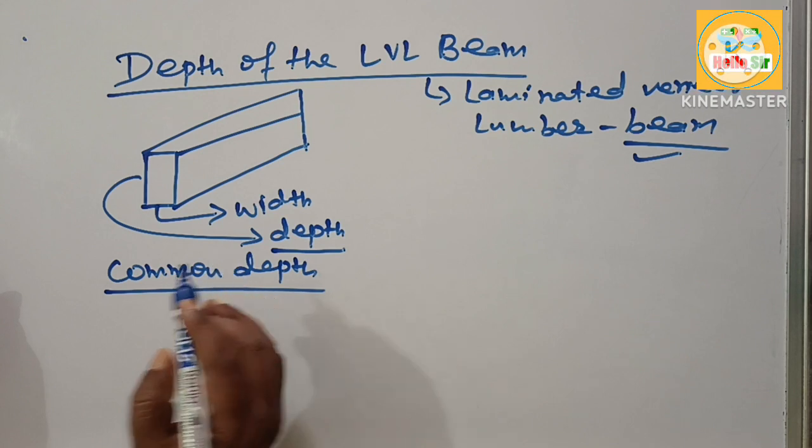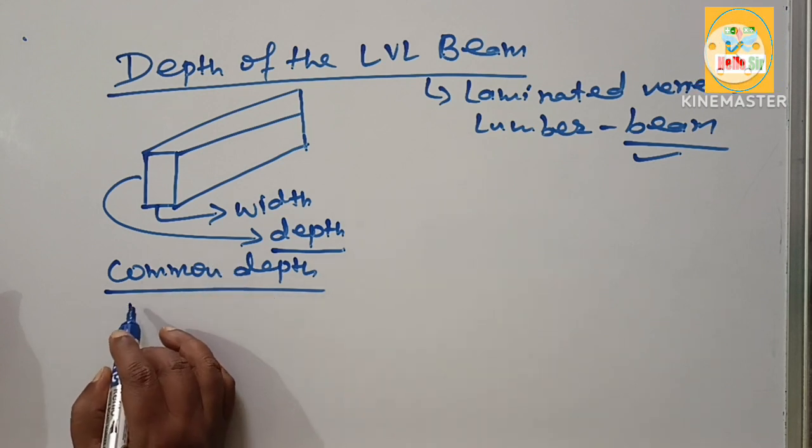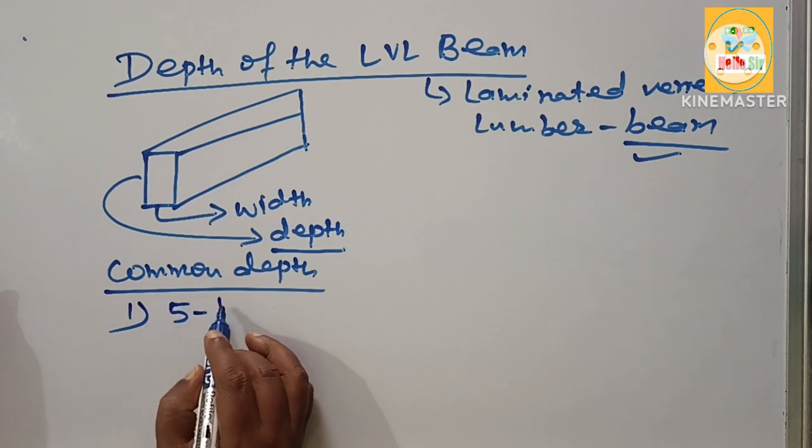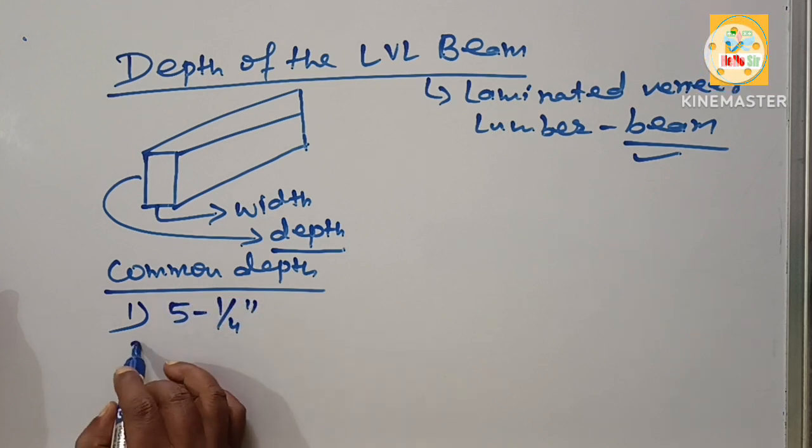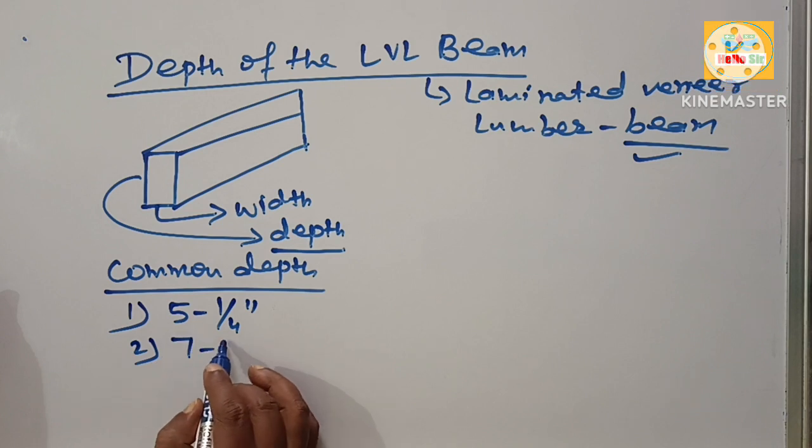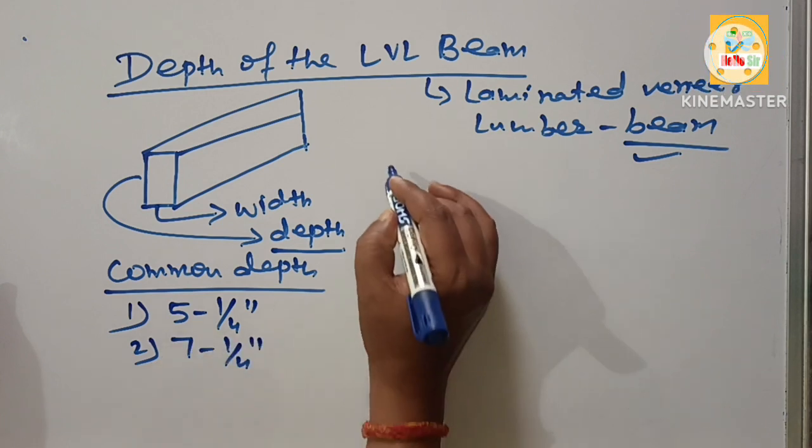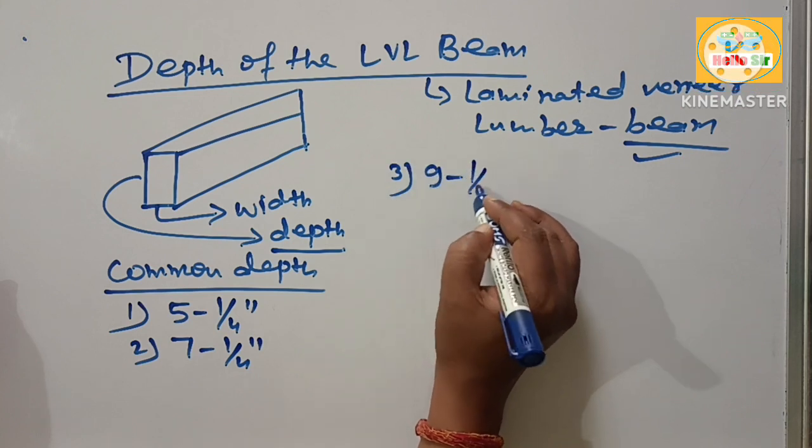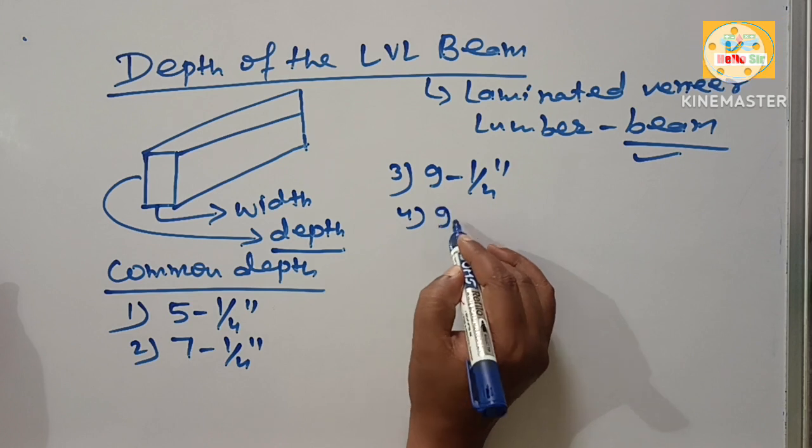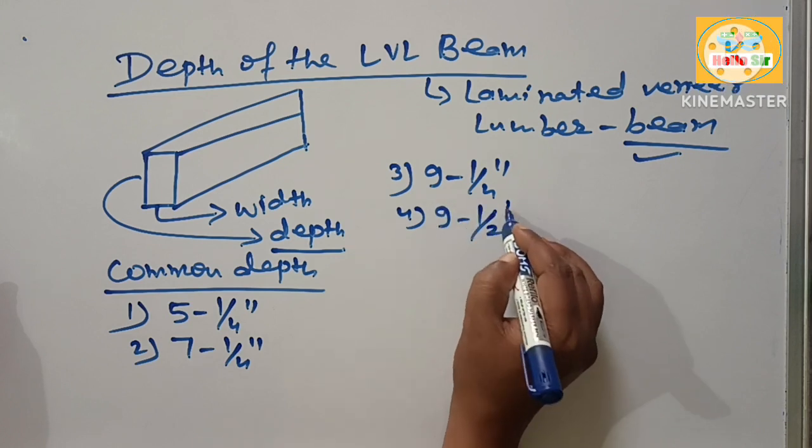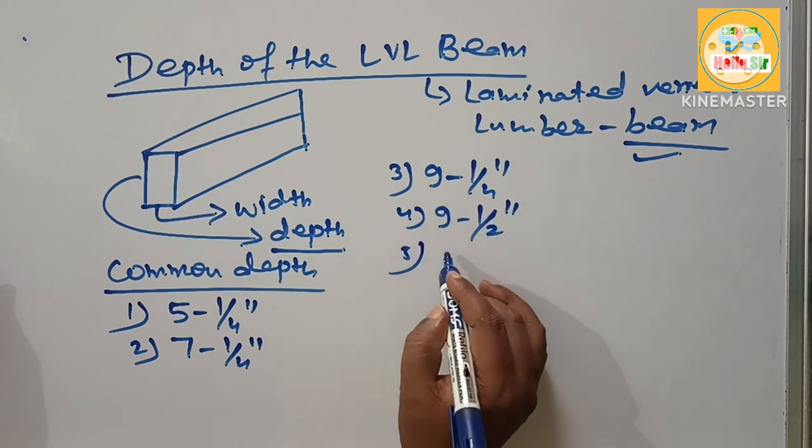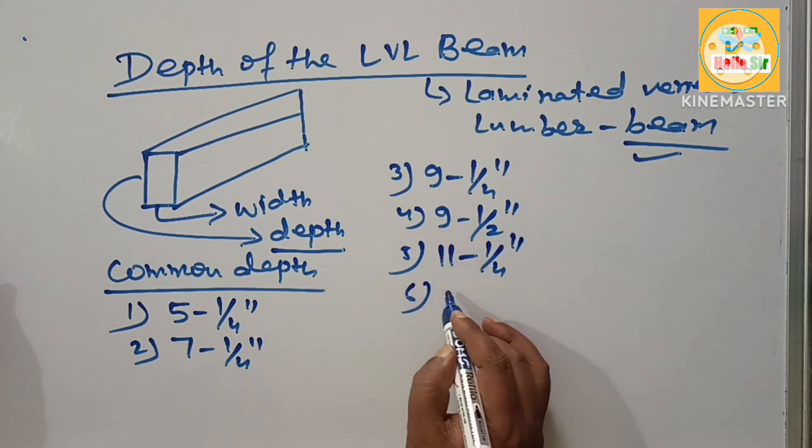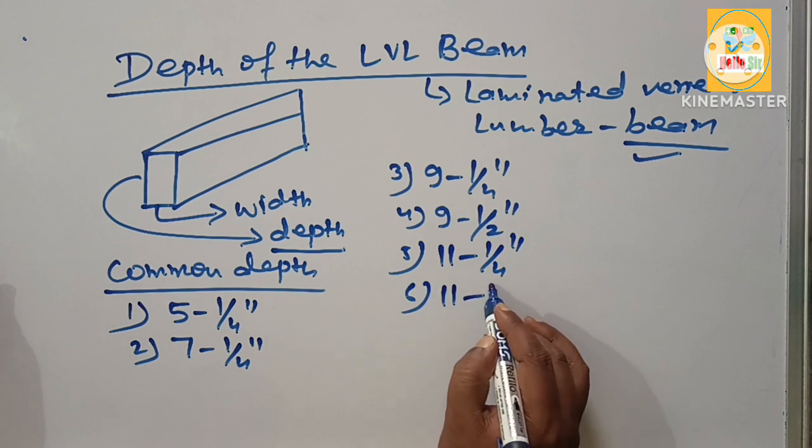The common depths start from 5¼ inches, 7¼ inches, 9¼ inches, 9½ inches, 11¼ inches, 11⅞ inches, 14 inches, 16 inches, 18 inches, and 24 inches.